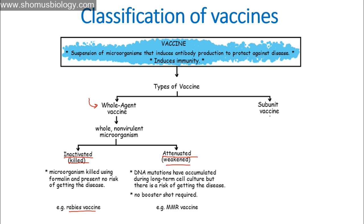For attenuated vaccines, we use accumulated DNA mutations through long-term cell culture, modifying the DNA with chemical mutagens over several rounds and generations. However, there is a big question mark — because the microorganism is not totally killed, it can reverse to a living pathogen and cause infection, which is always a possibility. An example is the MMR (mumps, measles, rubella) vaccine. Notably, no booster shot is required for attenuated vaccines.